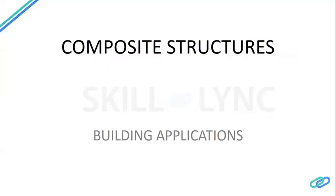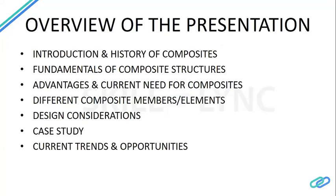We're going to discuss composite structures, specific to building applications. You can have composite structures in bridges, automobiles, or spaceships, but this is specific to building applications. The term composite can be defined as when two or more distinct elements are combined to serve a functionality or purpose. Our classic example is reinforced concrete — reinforced concrete members are already composite members.